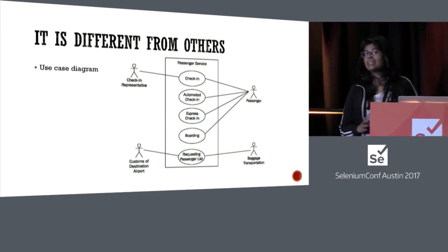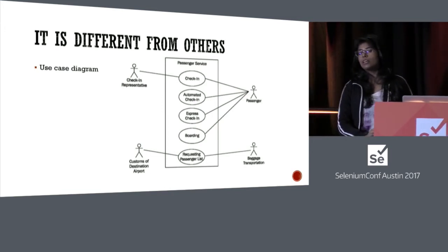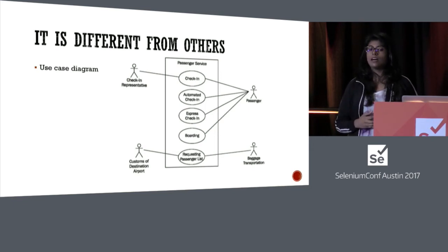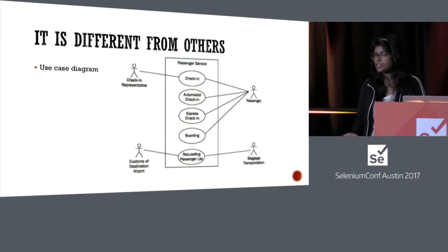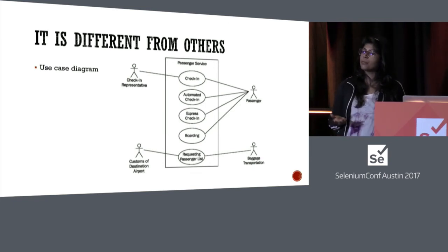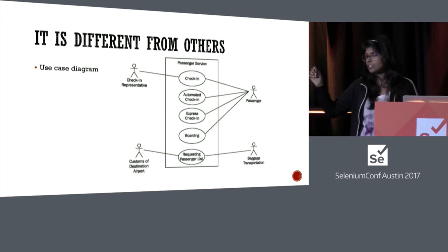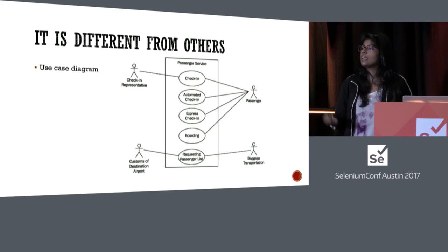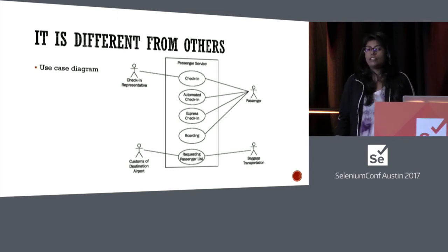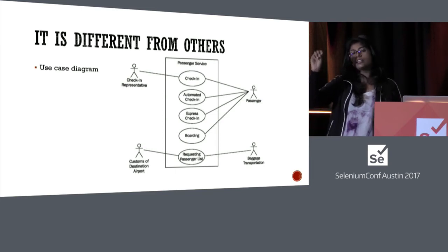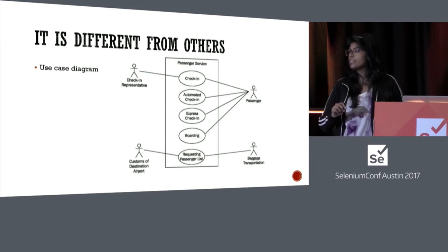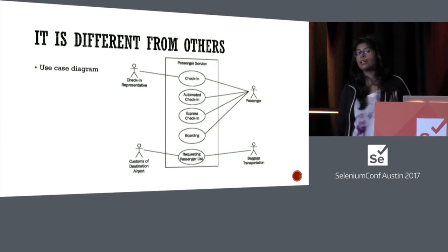For a use case diagram, it links entities to the actions they perform. If my application has user role-based functionality, I can add users as a different branch and link each user to the specific branches they have access to. If a user only has read-only access and no write or execute access, I don't need to perform those test cases — I just link that user to the read-only branch, creating a kind of use case diagram within my mind map.